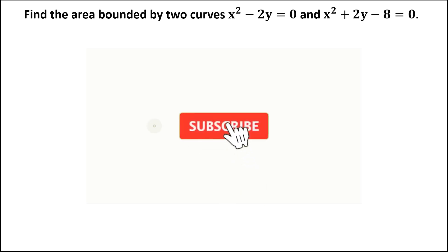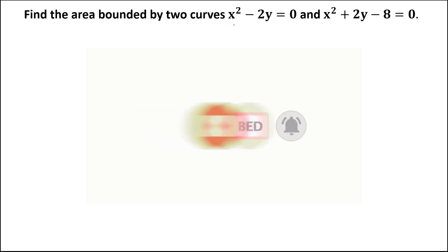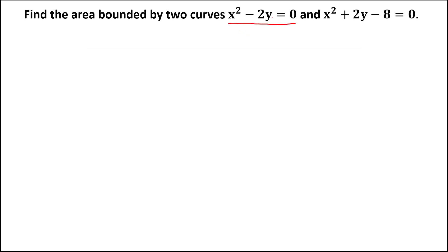Let's solve this problem. To find the area bounded by the two curves, for this curve, since the given is x squared, we need to solve the y-intercept. If the given is y squared, solve for the x-intercept.